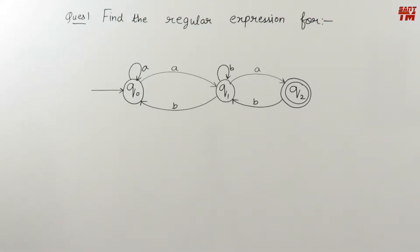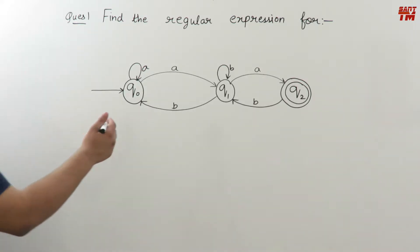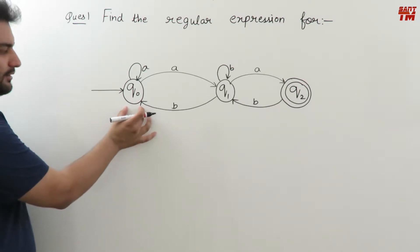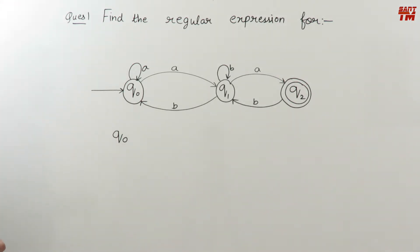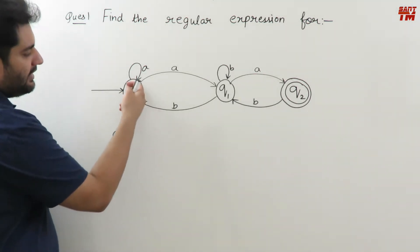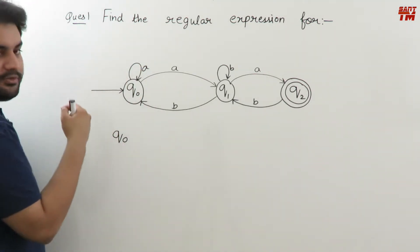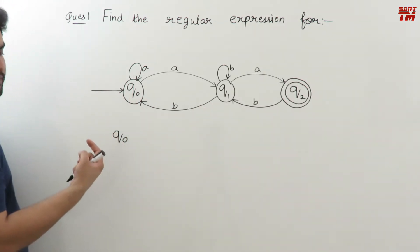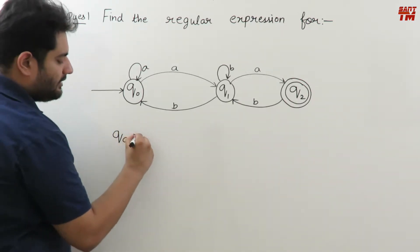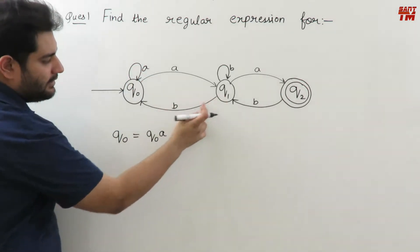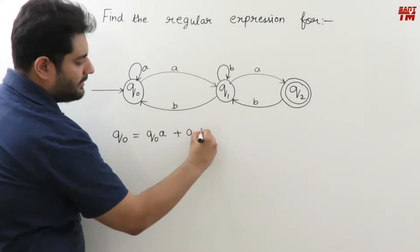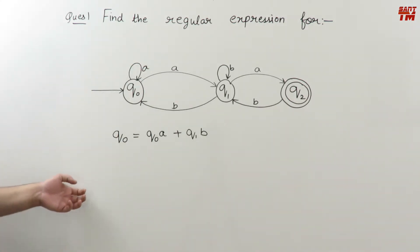Consider this example: this is the finite automata given to us and we have to find the regular expression. The first step is to make the state equations. The initial state is q0, so consider q0 first. For the state equation of q0, you find all the incoming edges. The incoming edges to q0 are: one with input symbol 'a' from q0 itself, and one from q1 with 'b'. So the state equation for q0 is: q0 = q0·a + q1·b.